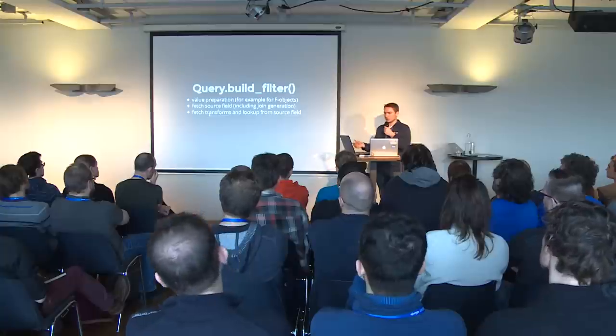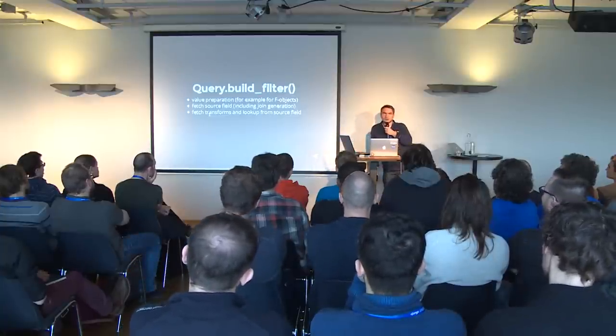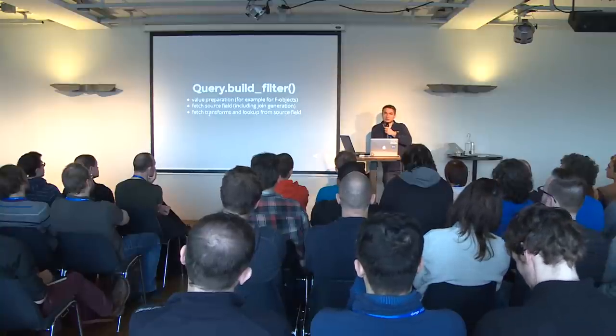The actual lookup handling happens in `query.build_filter` — that's the method we are going to look at more closely. `build_filter` does value preparation: for example, if we have F objects, we need to add those to the query, setting up joins for the F objects. The F object implementation is going to change soon — there's a big new feature about a public API for expressions, and I may show you what it's all about.